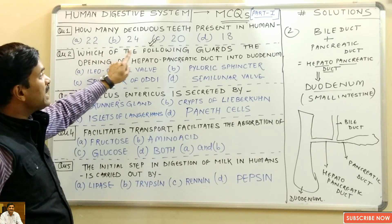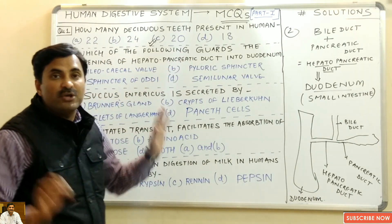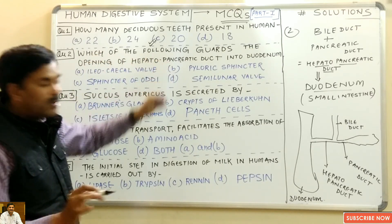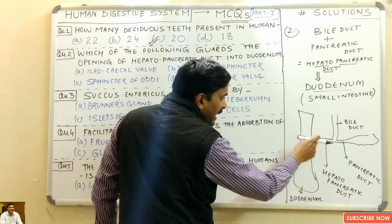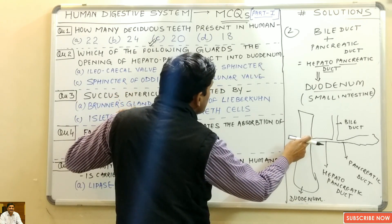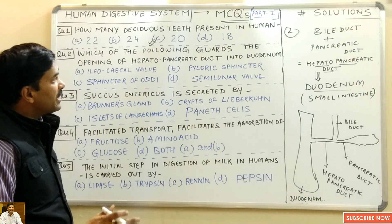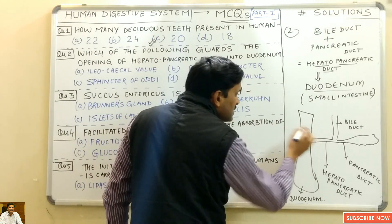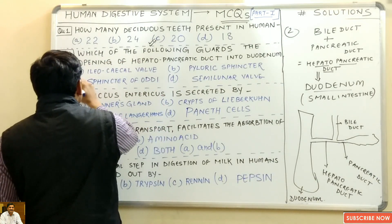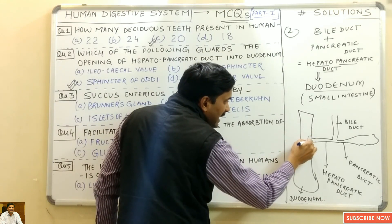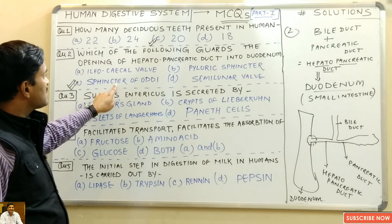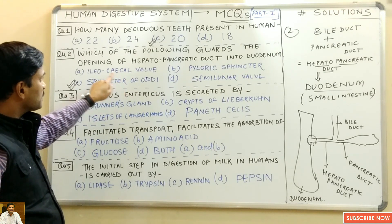The question is: which of the following guards the opening of the hepatopancreatic duct into the duodenum? At this site there is a sphincter present which guards this opening, and that is known as the sphincter of Oddi. So the answer is the sphincter of Oddi.